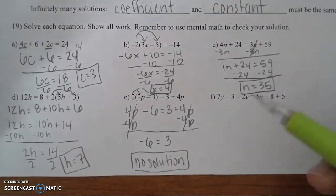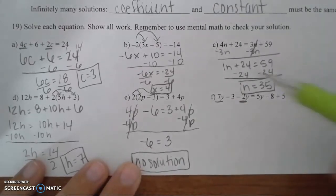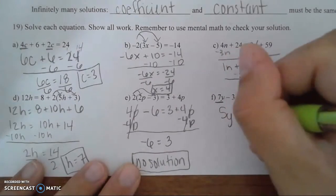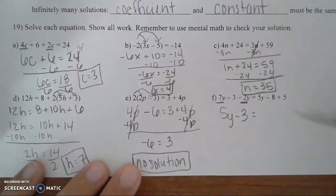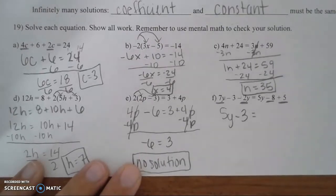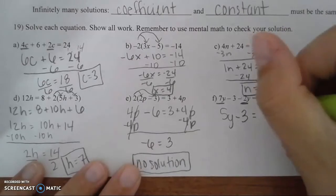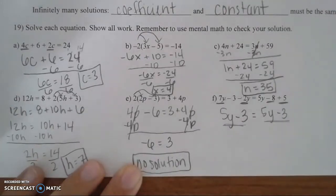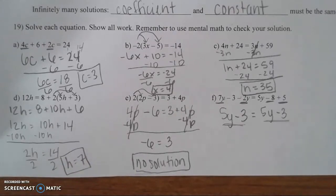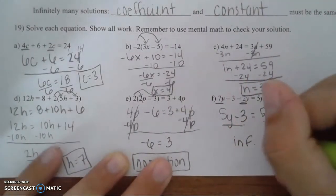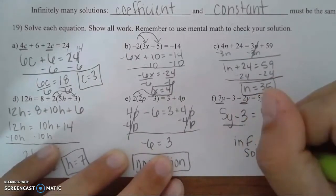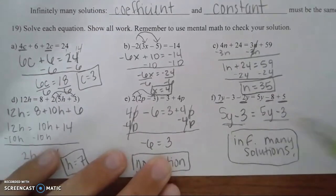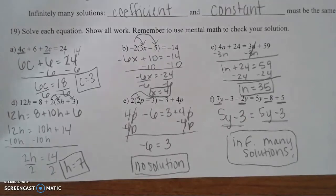For the last equation, combine like terms on both sides. On the left: 7y minus 2y gives 5y, minus 3. On the right: negative 8 plus positive 5 gives 5y minus 3 as well. When you see the left side equaling the right side — the same expression on both sides — you automatically know this gives infinitely many solutions. You can stop there; if you continue, you'll just get negative 3 equals negative 3, which still confirms infinitely many solutions.